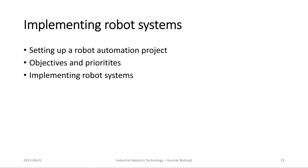Chapter nine on implementing robot systems takes a user perspective, addressing how a company should think about procuring and setting up robot automation. It covers the different phases of the process, setting objectives and priorities, risk analysis, and implementing robot systems including the selection of a system integrator for designing the robot system.